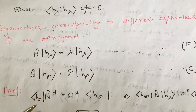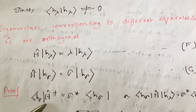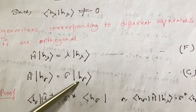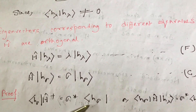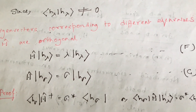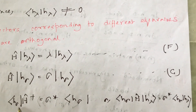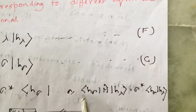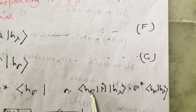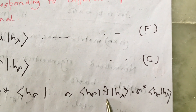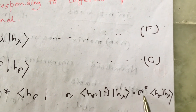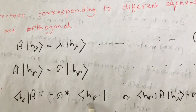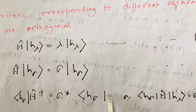Taking the dual conjugate of equation G: the ket vector becomes bra ⟨H_σ|, H becomes H dagger, and σ becomes σ*. Then multiplying this conjugated equation with ket |H_λ⟩ on the right gives: ⟨H_λ|H†|H_σ⟩ ... with σ* as the eigenvalue and the scalar product ⟨H_σ|H_λ⟩ appearing on the right-hand side.